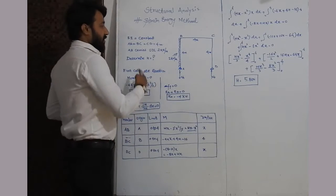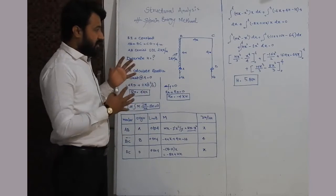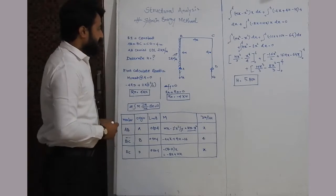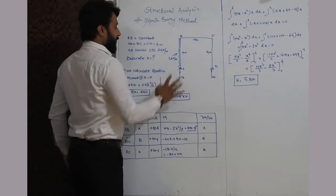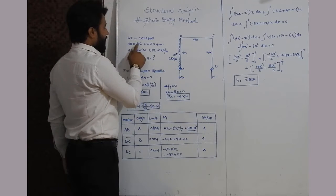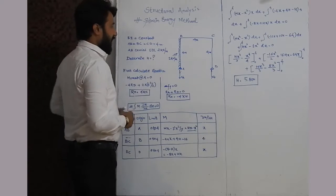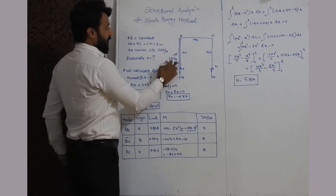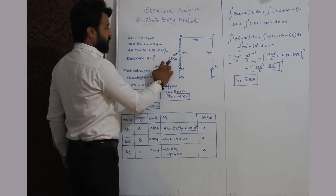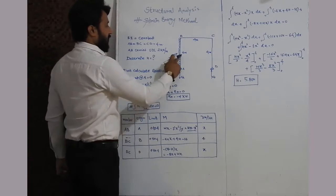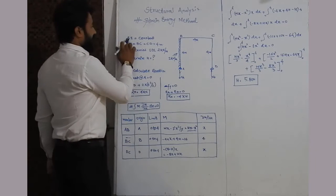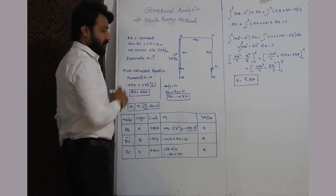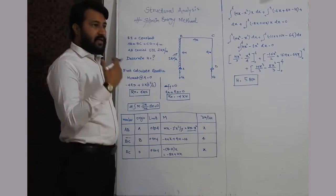The numerical given is an ABCD frame where the length of members AB, BC, and CD are each four meters. Member AB (a column) carries a UDL of 2 kilonewton per meter over its 4-meter span, and EI is constant. We have to determine the value of the horizontal thrust H.